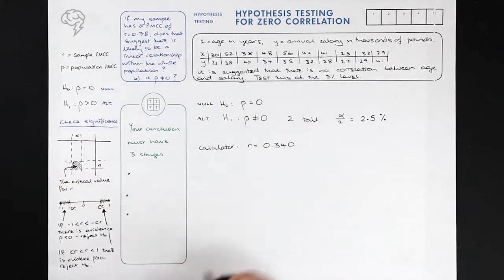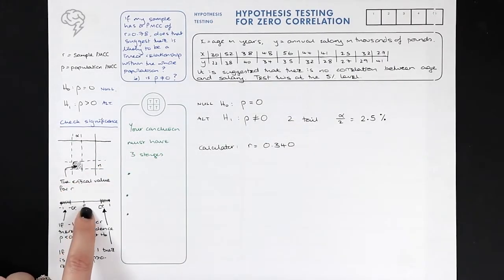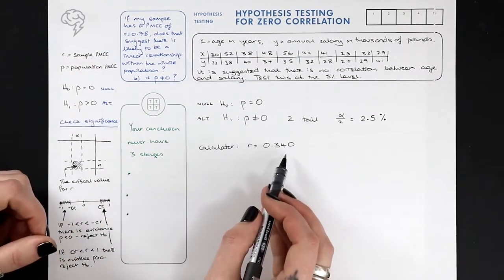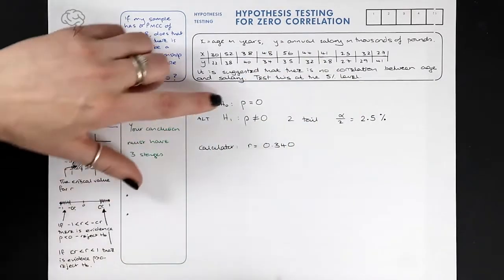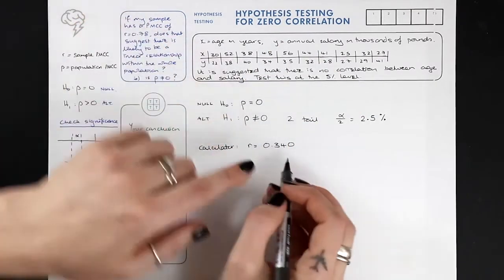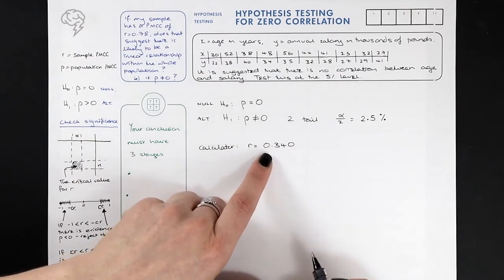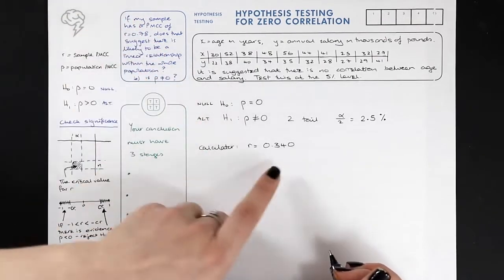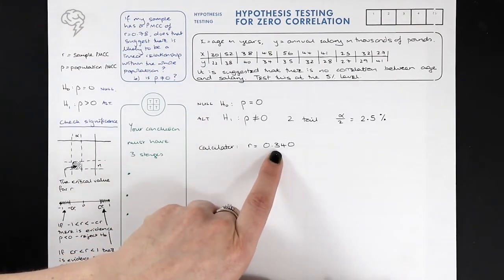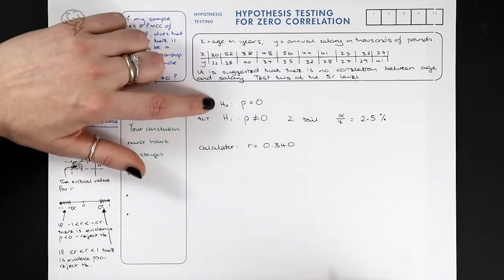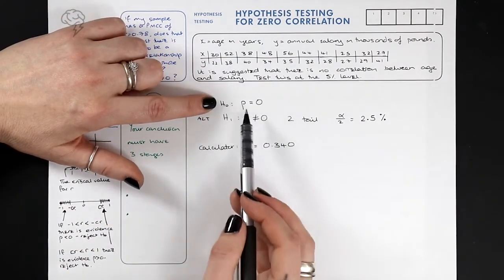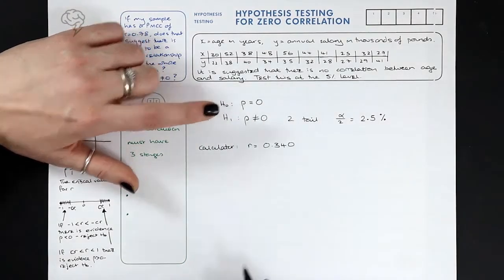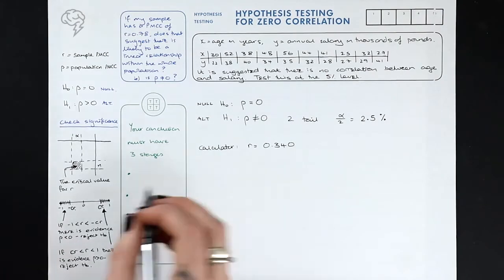0.340 looks a bit rubbish — it's quite near zero, it's positive but not high. That's what we're doing with hypothesis testing: if there's no correlation, how come I got a really high PMCC? That would be significant and weird, and we'd reject H0. In this case we've got a pretty low PMCC, so I think we're probably not going to reject H0 and will stick with the conclusion that there is no correlation between age and salary.